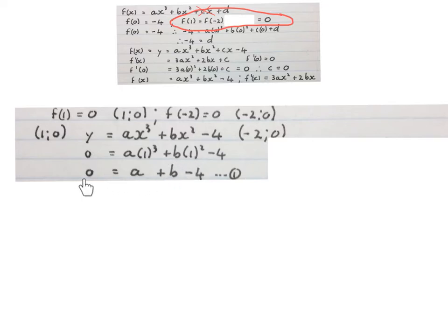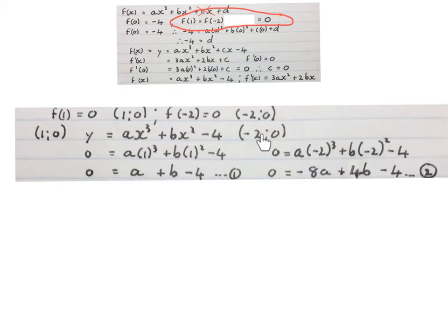We take the current formula and substitute each coordinate in separately. Substituting x = 1 and y = 0 gives the first part of a simultaneous equation with two unknown variables. Then substituting x = -2 and y = 0 gives the second equation, completing our simultaneous equation system with two unknowns.